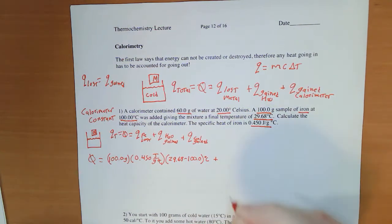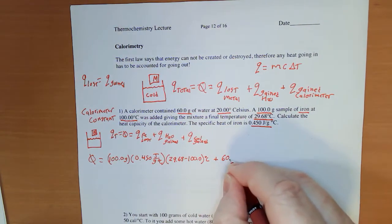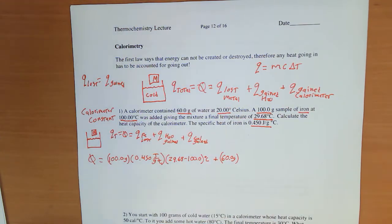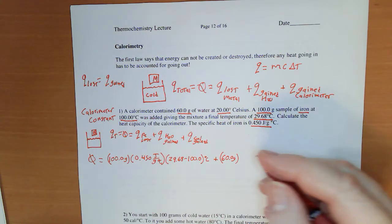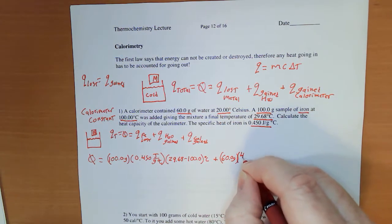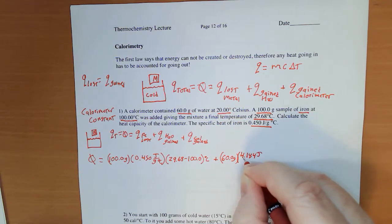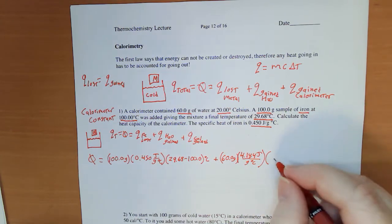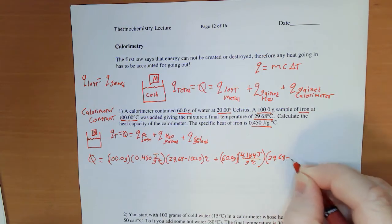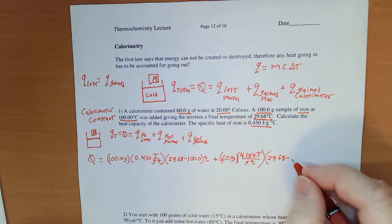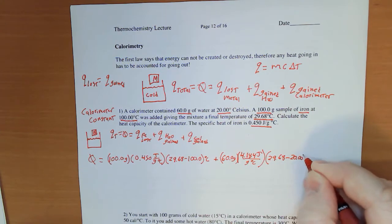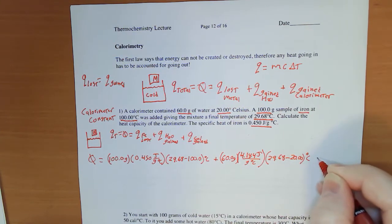Plus, I have 60.0 grams of water. Often we're told the volume in milliliters, but density is 1.00 grams. Times the heat capacity of water, I'll use 4.184 joules per gram degree Celsius. It ends at the same temperature but it started at 20 degrees Celsius.